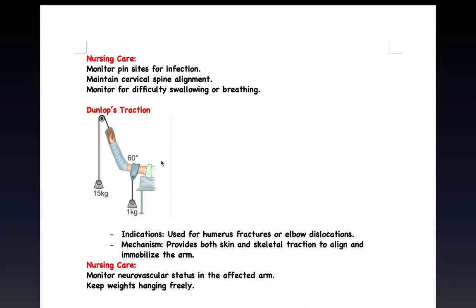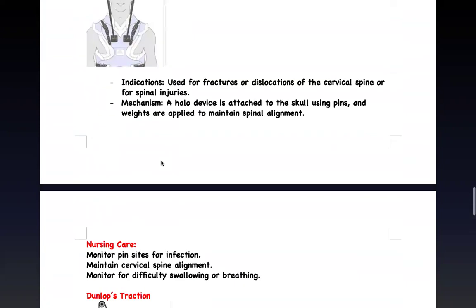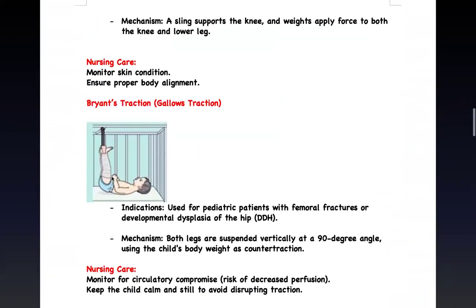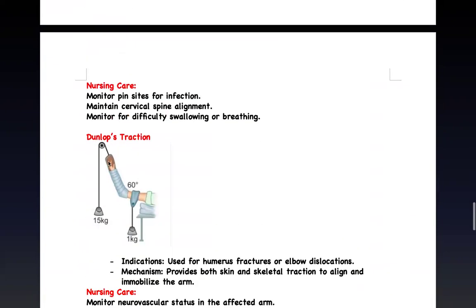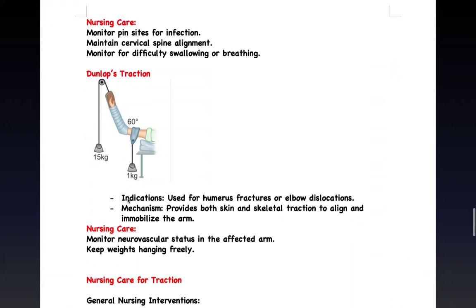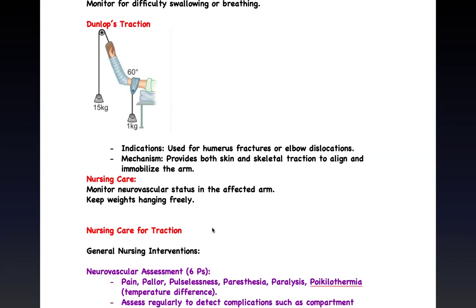Dunlop's traction is similar to Gallows traction but for the upper extremity. Instead of the legs being suspended, it is the hand. It is used for older patients with a humerus or elbow fracture to keep the arm in alignment. A pin goes through the hand and weight maintains alignment. It applies both skin and skeletal traction principles, but primarily functions as skeletal traction. Check neurovascular status and keep the weights hanging freely.